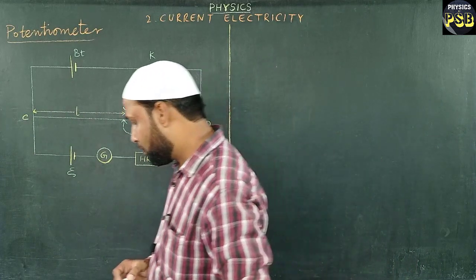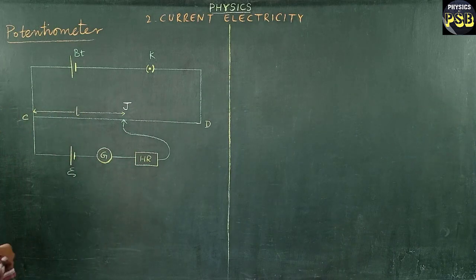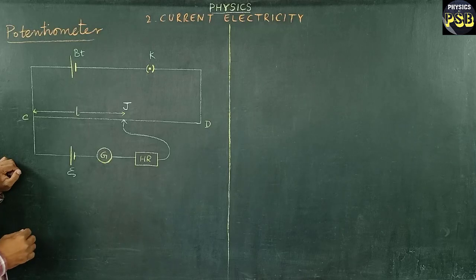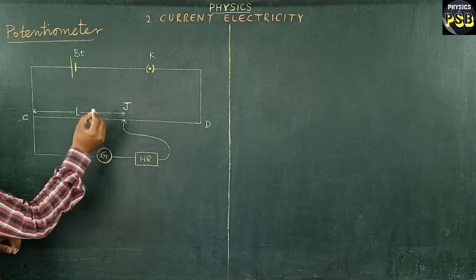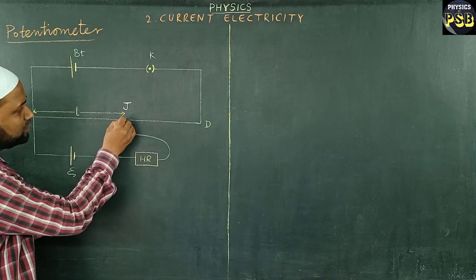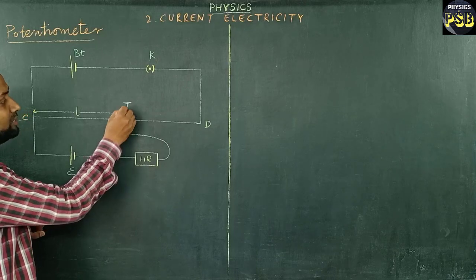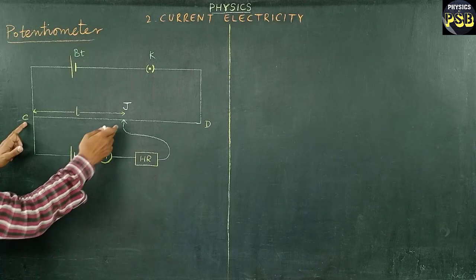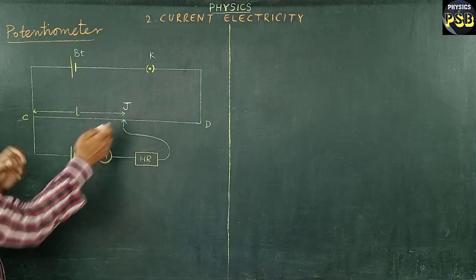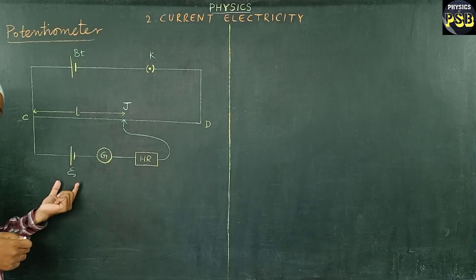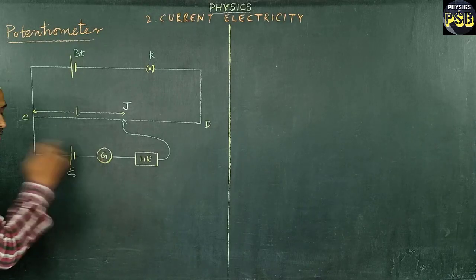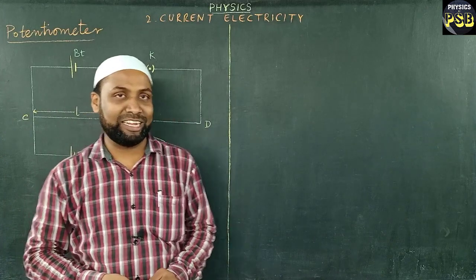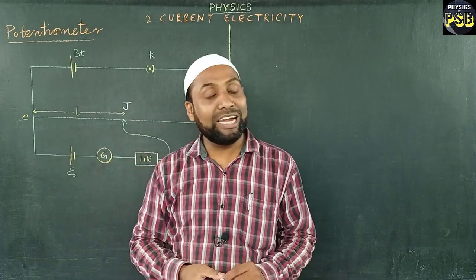In the potentiometer circuit, if the jockey is pressed at a point J, and the potential difference across CJ is equal to the EMF of the cell, then no current will flow through the galvanometer and it shows zero deflection — this is also called null deflection.